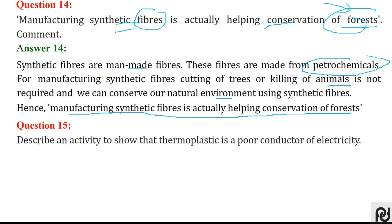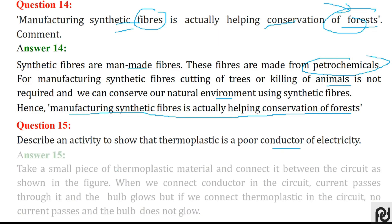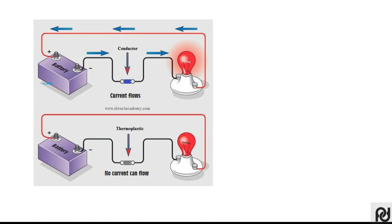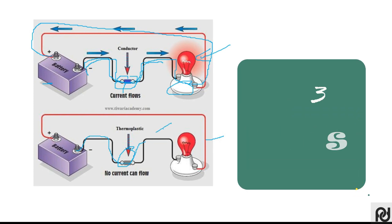The final question: describe an activity to show that thermoplastic is a poor conductor of electricity. As shown on the screen, when connecting a battery with a current-carrying conductor, the bulb glows and the whole circuit is complete. On the other hand, when a piece of synthetic fibre is placed at the conductor, the whole circuit is broken and the bulb does not glow — demonstrating that thermoplastic is a poor conductor of electricity.